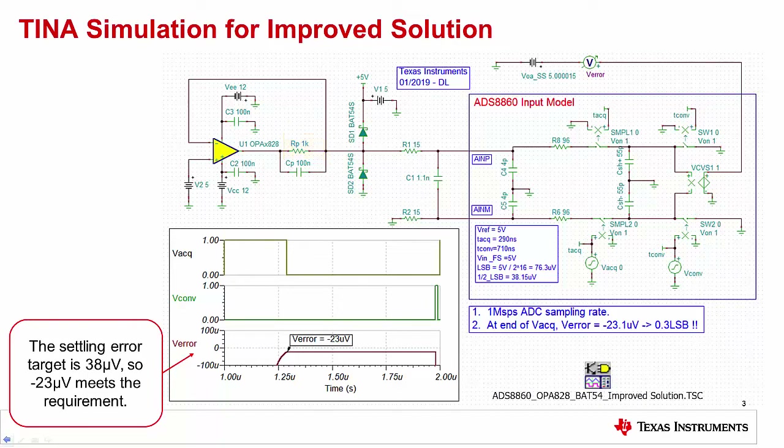The key point to take away here is that not only does the circuit have improved settling performance, but it also has better current limiting capabilities. On the next slide, we'll check the measured performance.